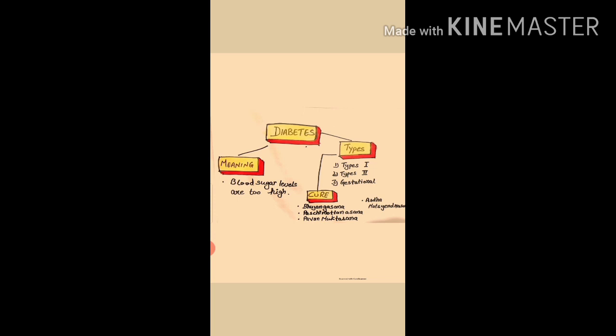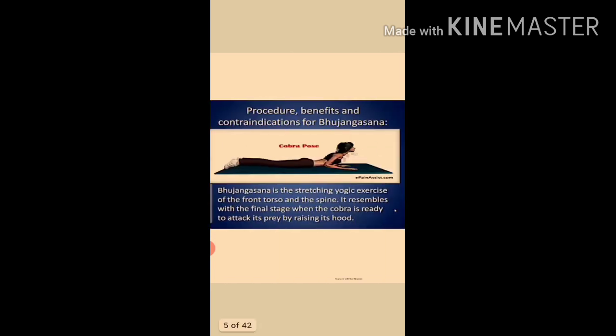There are three types of diabetes: Type 1, Type 2, and gestational diabetes. To cure diabetes, the following asanas are practiced: Bhujangasana, Paschimottanasana, Pavanamuktasana, and Ardha Matsyendrasana. Next, we discuss the procedure, benefits, and contraindications for Bhujangasana.